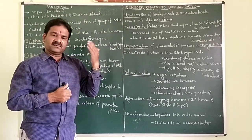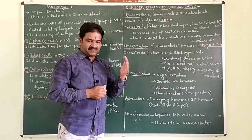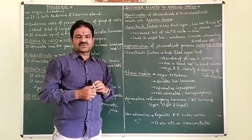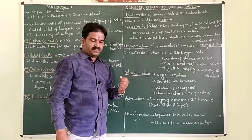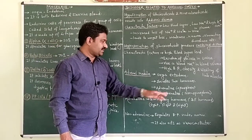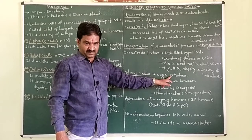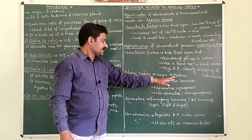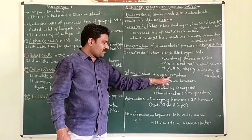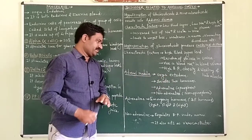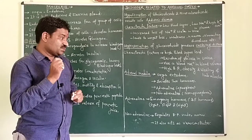The next part is the adrenal medulla, which is the innermost part of the adrenal gland. This adrenal medulla is originated from the ectoderm, meaning it is made up of ectodermal tissue. It secretes two hormones.